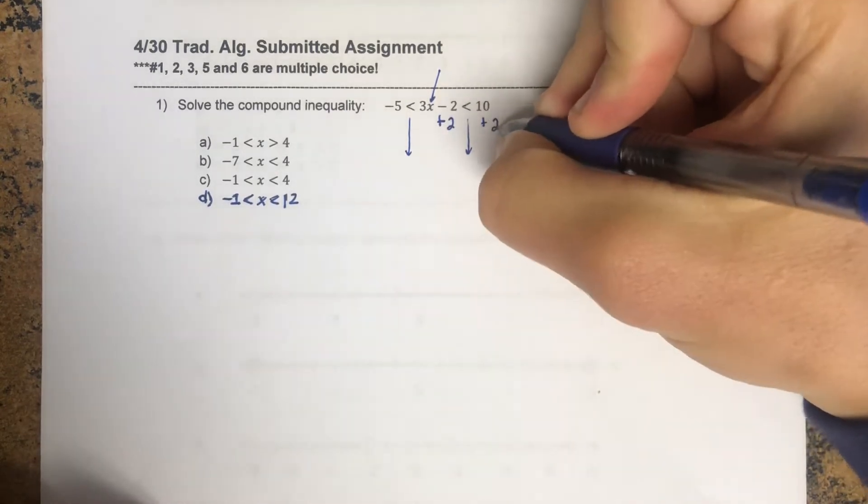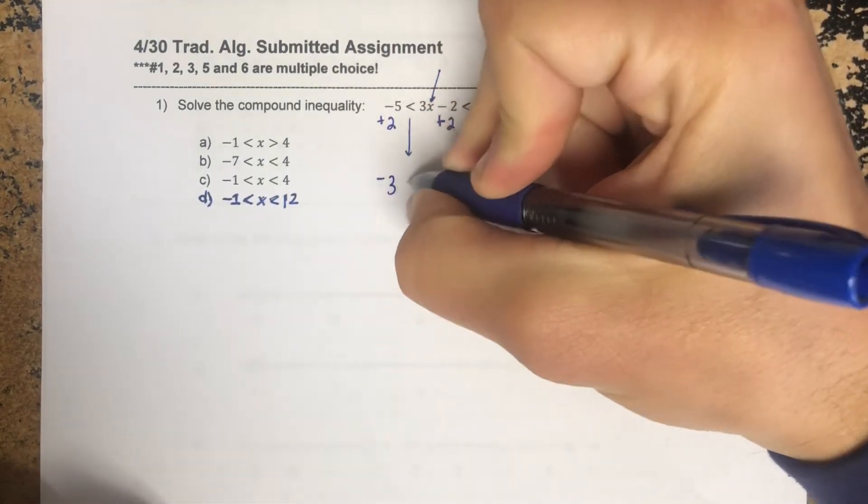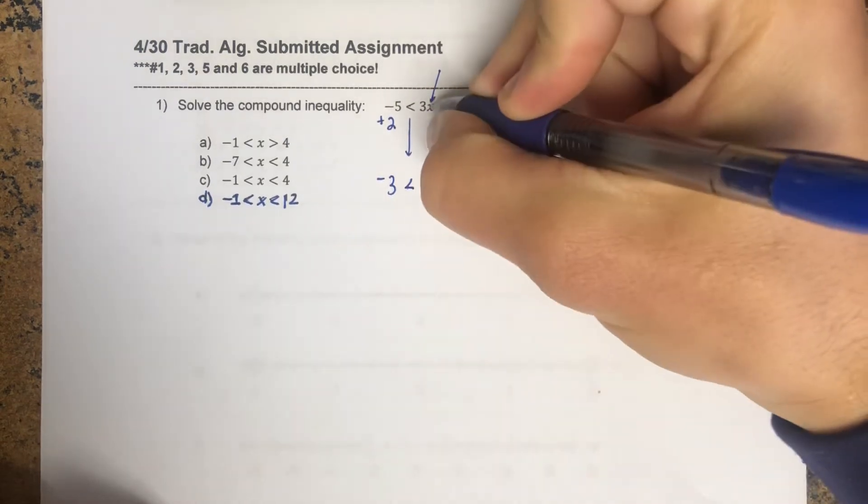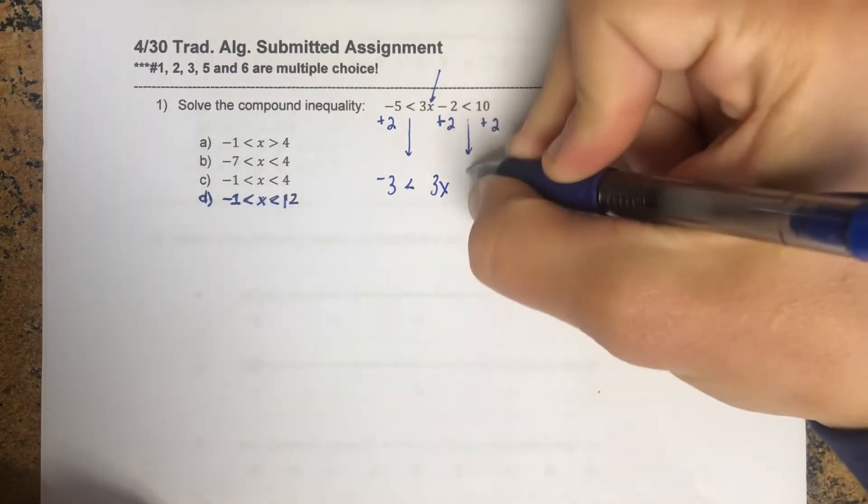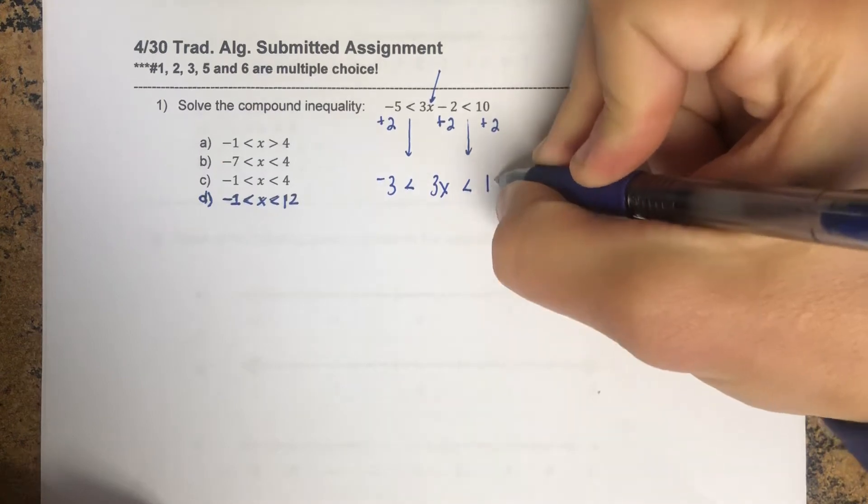So I'm going to start by adding the 2. Negative 3 is less than, that sign comes straight down. Whatever you didn't use come straight down. That sign comes straight down, 12.